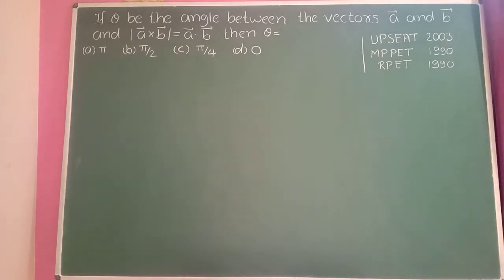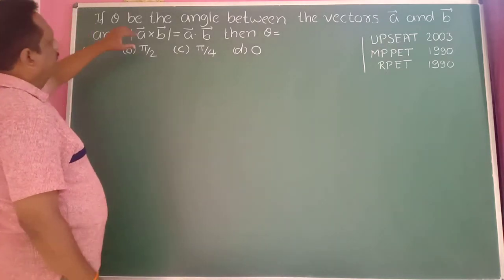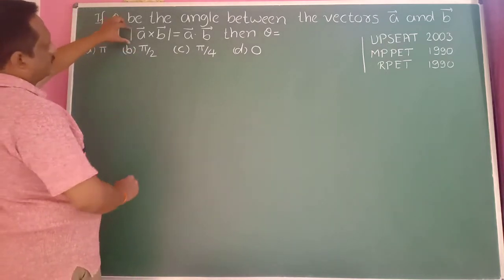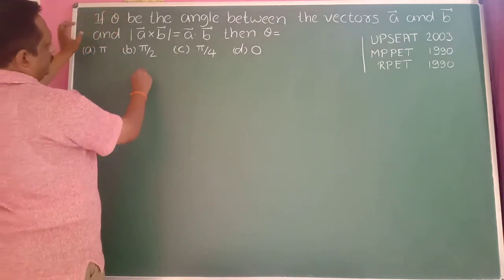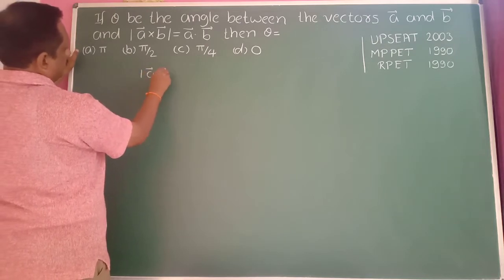If theta is the angle between the vectors a-bar and b-bar, and modulus of a-bar cross b-bar is equal to a-bar dot b-bar, then theta is equal to what? This is a very simple example.